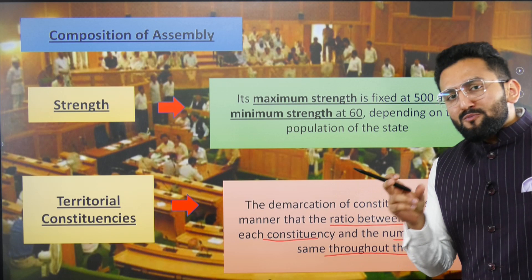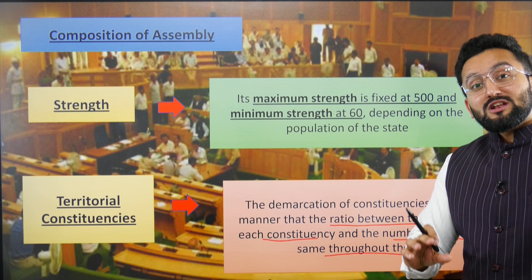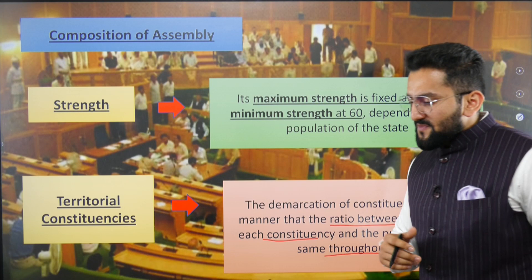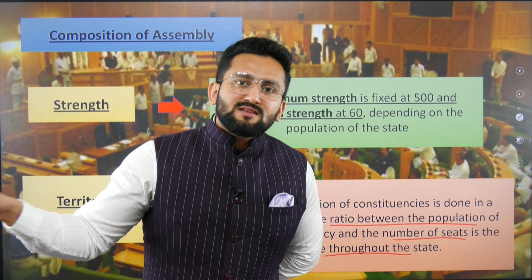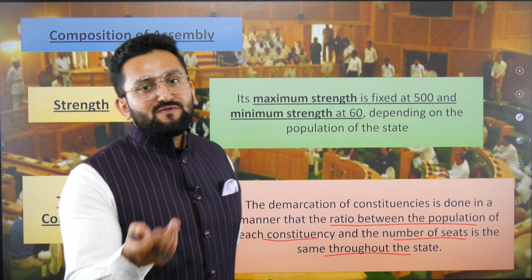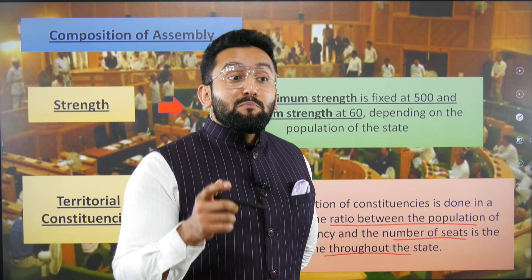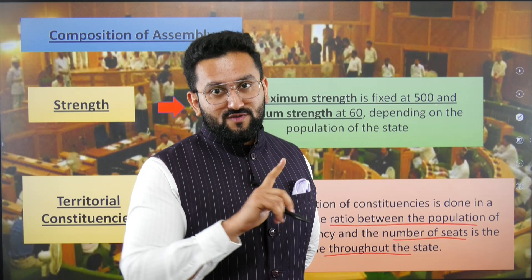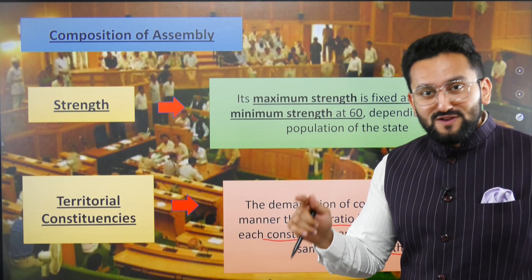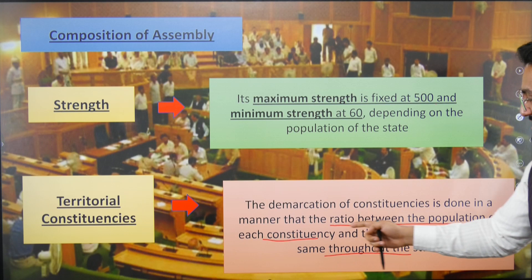Consider an example: if one MLA represents a constituency of just two people and another MLA of the same state represents 50 lakh people, that is injustice to the larger constituency — one representative for two people versus one for 50 lakh. To reduce this disparity, the ratio between population in each constituency and the number of seats in the state is kept the same.